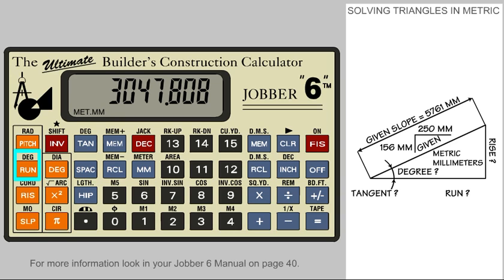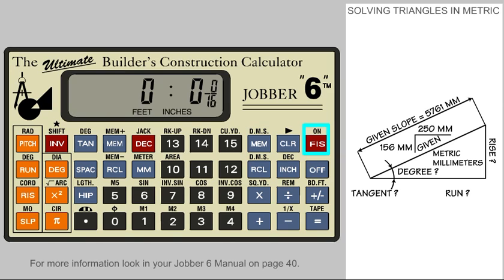Let's go back to the pitch. With the pitch in the display, say we want to know what the equivalent pitch would be in imperial or feet-inch mode. The simplest way is to store the metric pitch in memory, go to the feet-inch mode, and press the recall key. The equivalent pitch is 7 and 11 sixteenths to 12 inches.